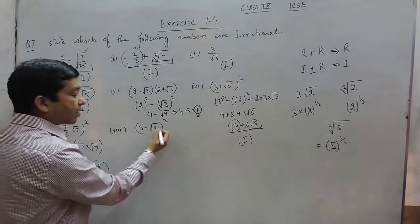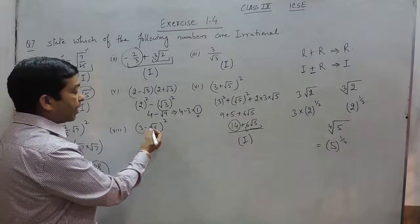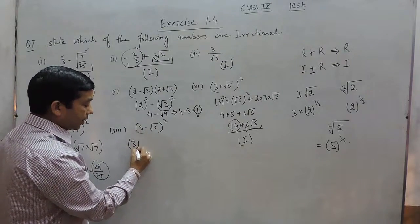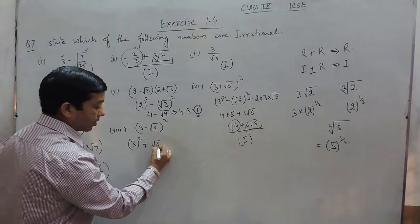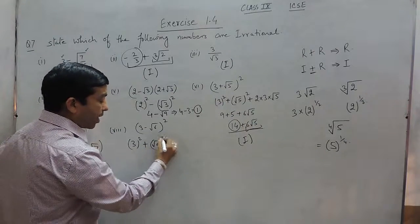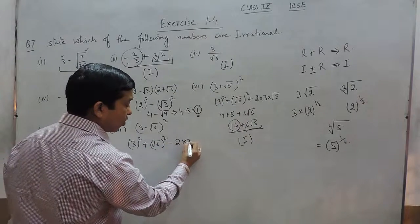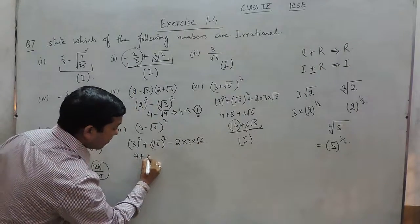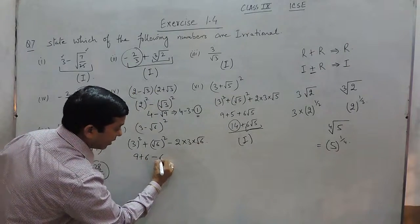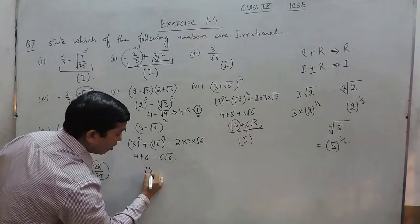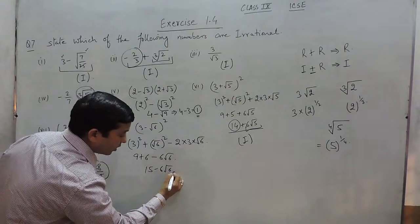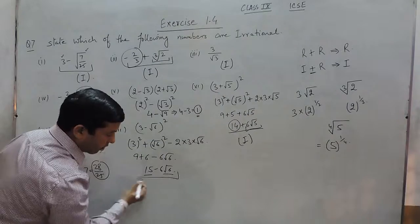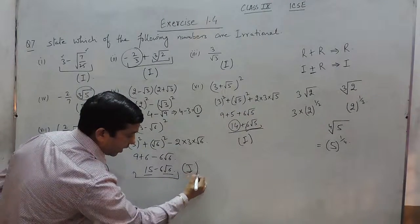For (3 - √6)², again using (a - b)² = a² + b² - 2ab. This can be written as 9 + 6 - 6√6, or 15 - 6√6. Here 15 is a rational number and 6√6 is irrational, but as a whole it is known as irrational.